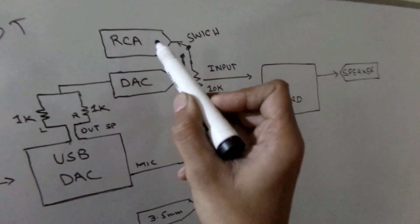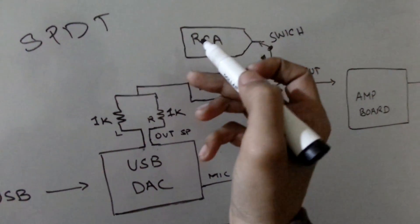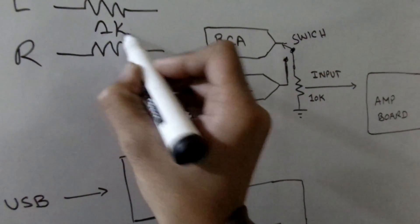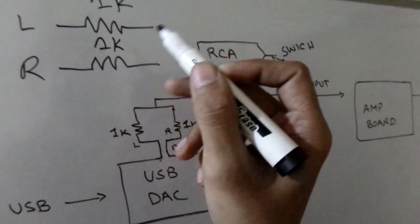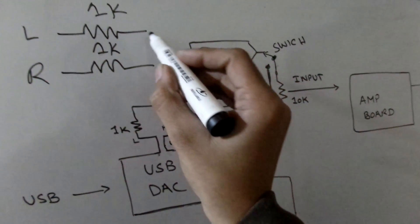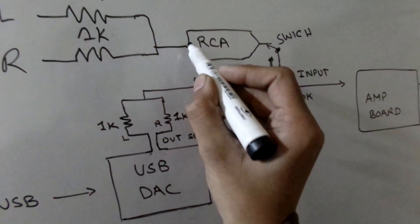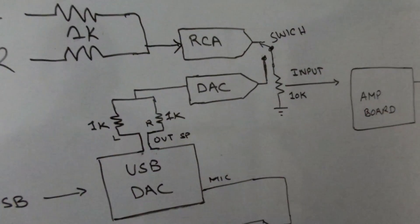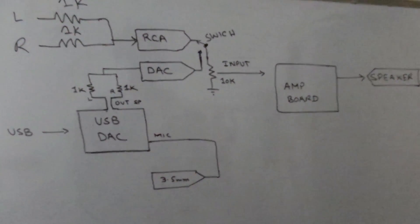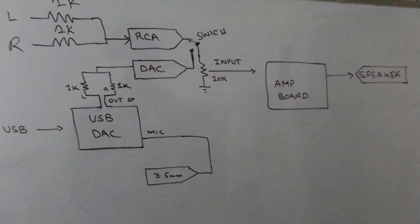We'll take the power from the USB terminal — the positive and negative of USB. If you are using this switch, you need to create another passive mixer. That is why I didn't need that switch and RCA connector. Instead, I will be using this RCA connector with the microphone port instead of a 3.5mm jack.